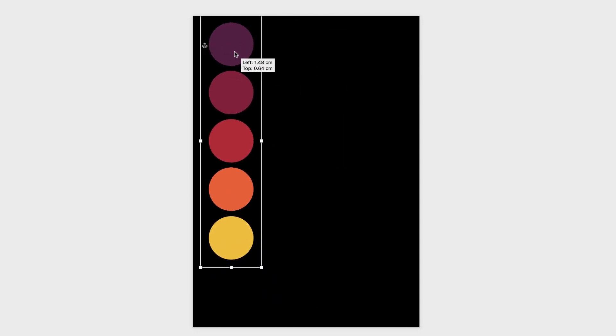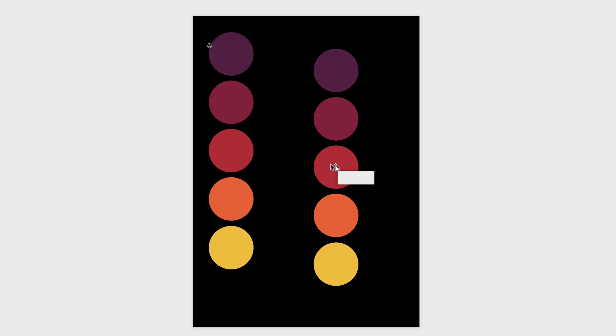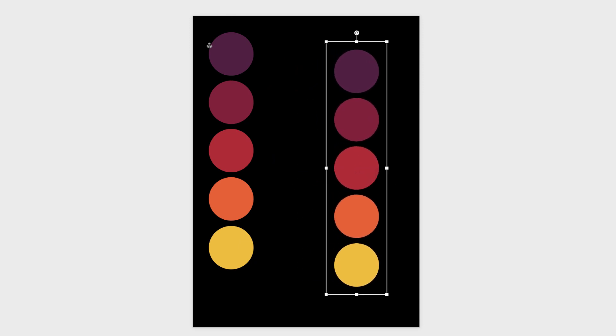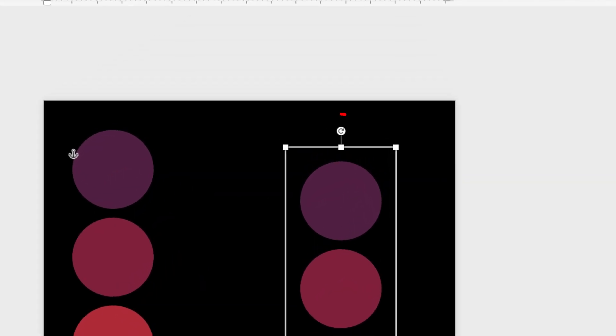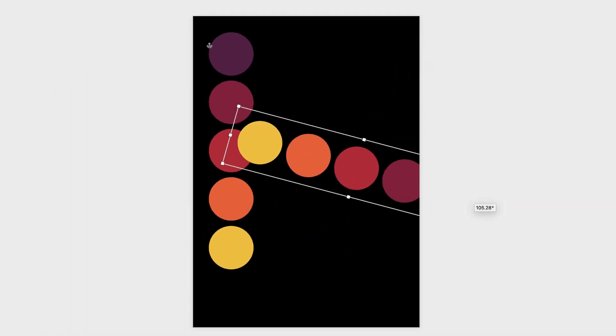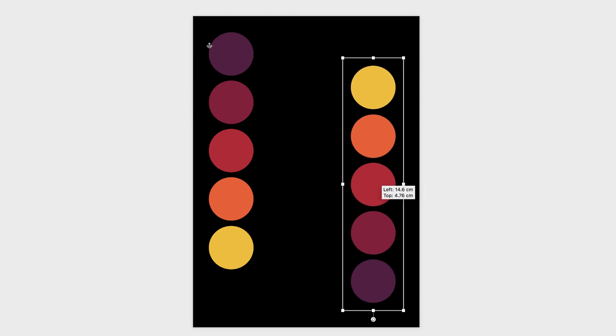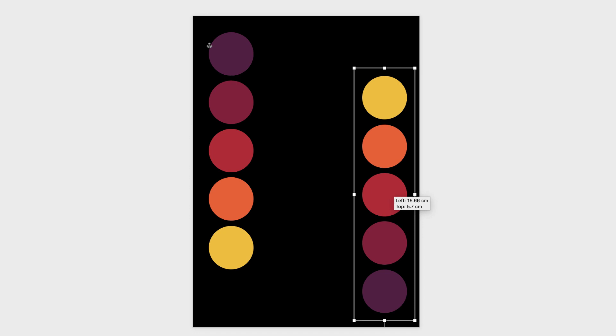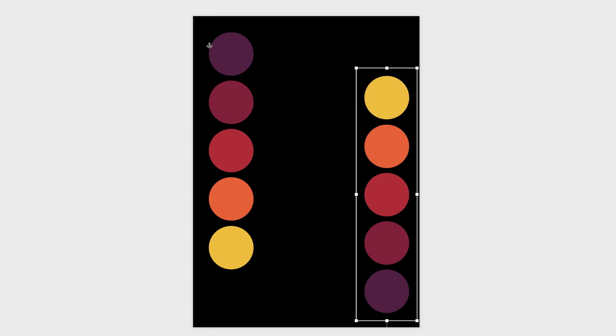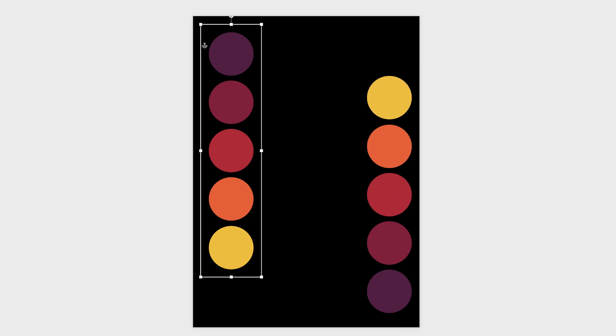I'm going to copy and paste this group — you can use Command/Control C and V, or just hold down Alt or Option and click and drag. Then I'm going to use the circular rotation tool icon at the top to spin the object around. I'll place one copy at the bottom and line up the edge of the box with the edge of the page.